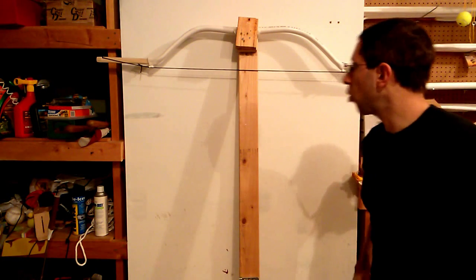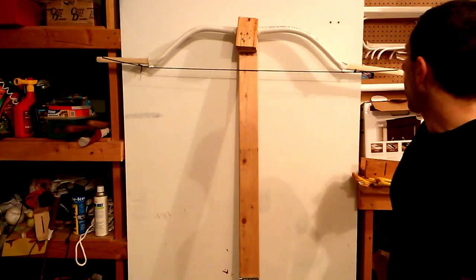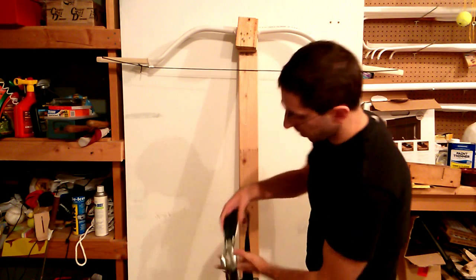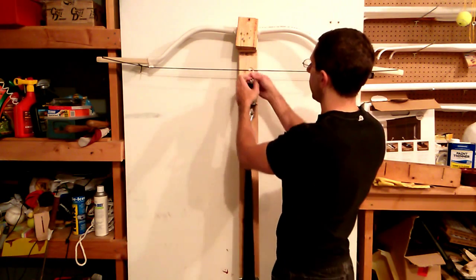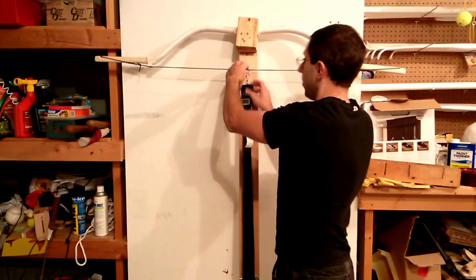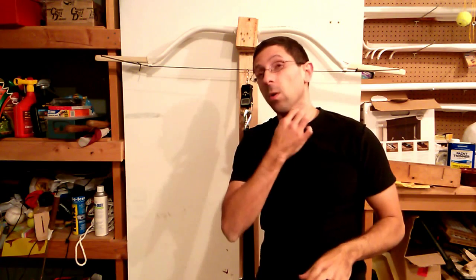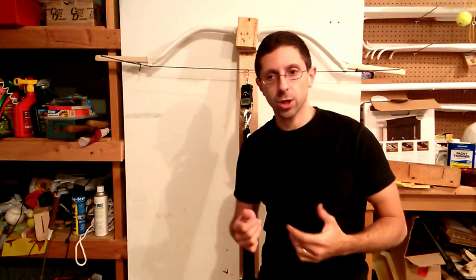I've got the Manchu 2.0 bow and I'm going to try drawing it in a slightly different way to determine the force draw curve. We're not only trying to find the peak draw force, but I want to find out exactly how plump it is, how convex the force draw curve is. I'm going to use a method that was used by Adam Karpovich when he was testing some of his Turkish bows.